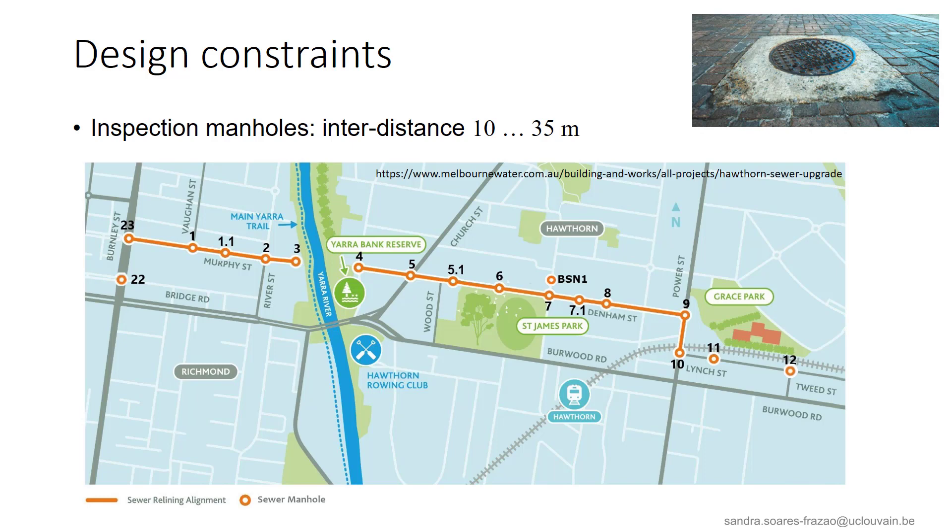Finally, inspection manholes should be installed every 10 to 35 meters on average. These also allow an adjustment of the pipe slope to the ground or street level.